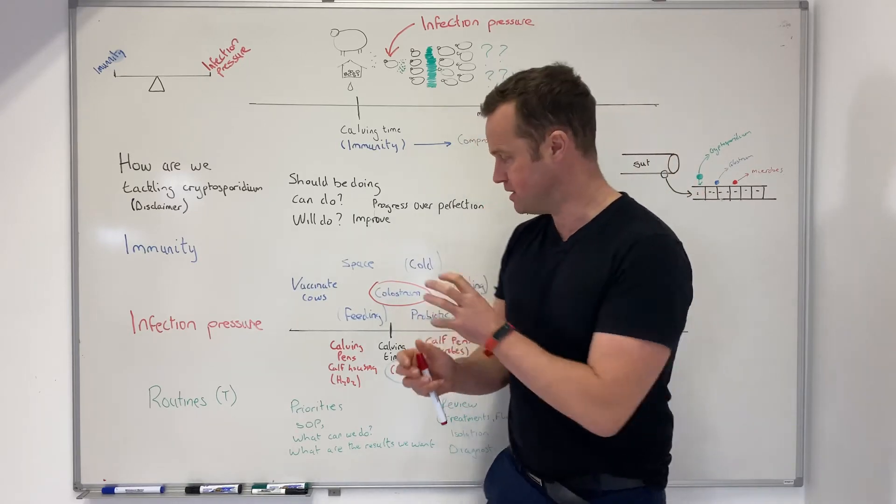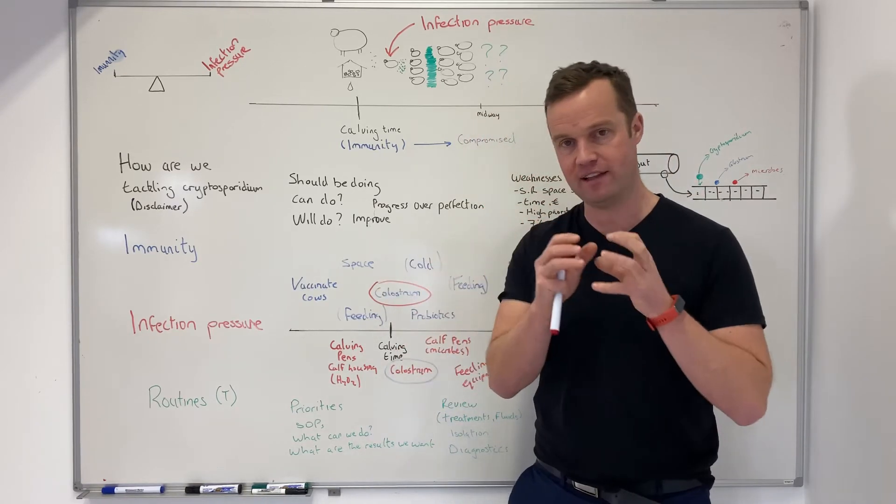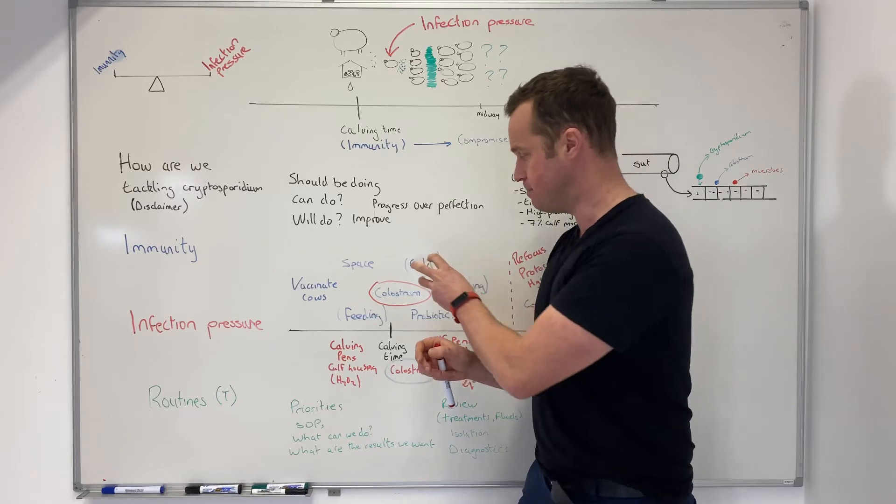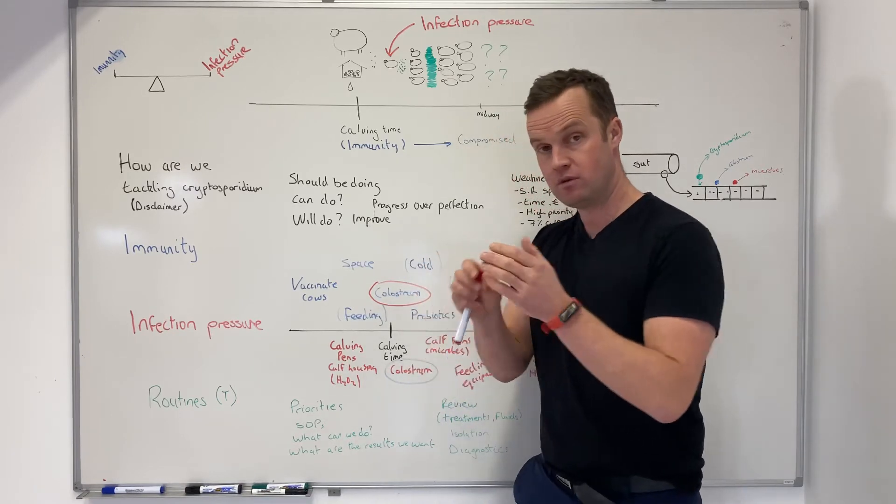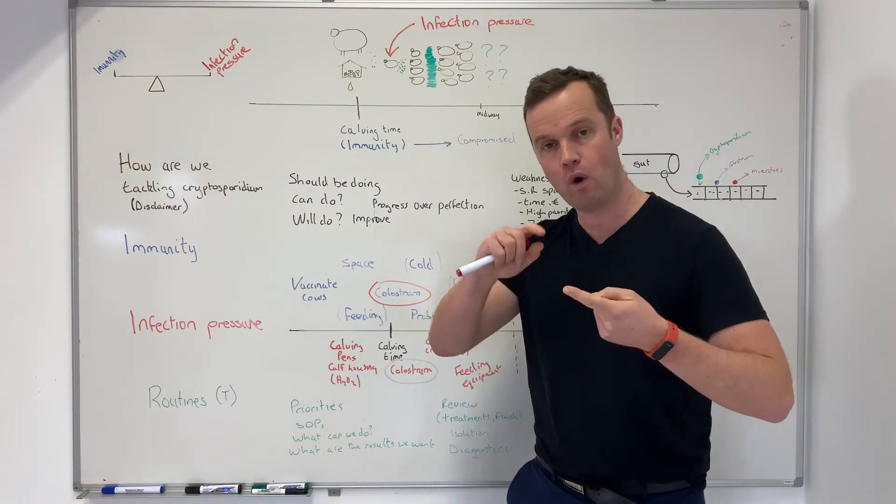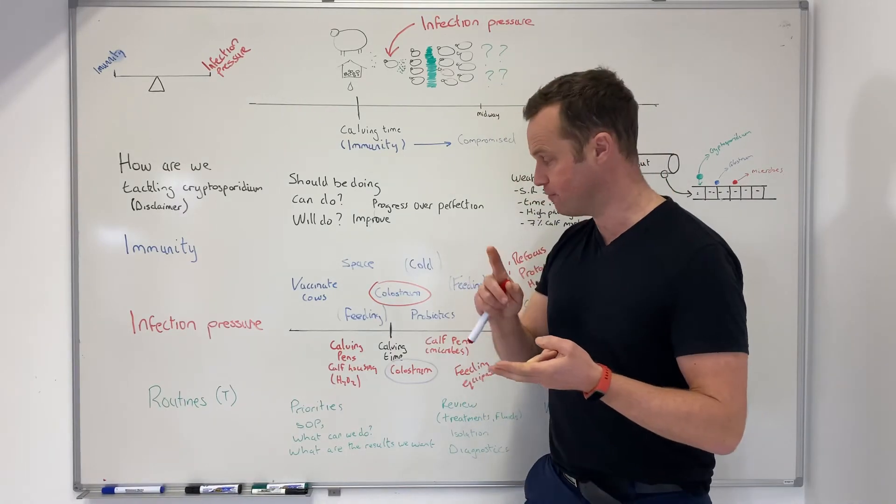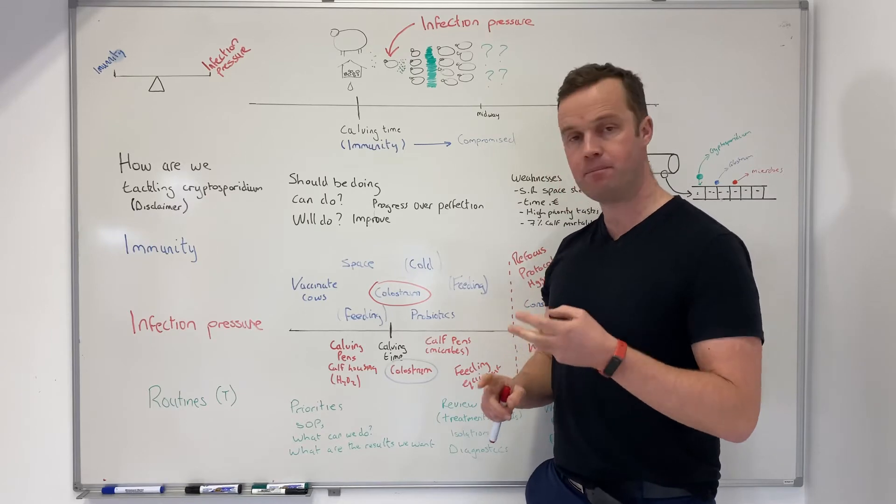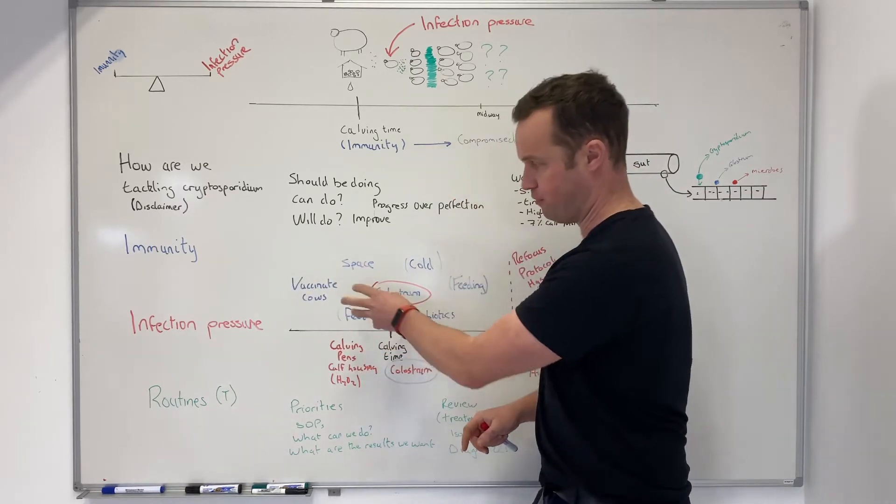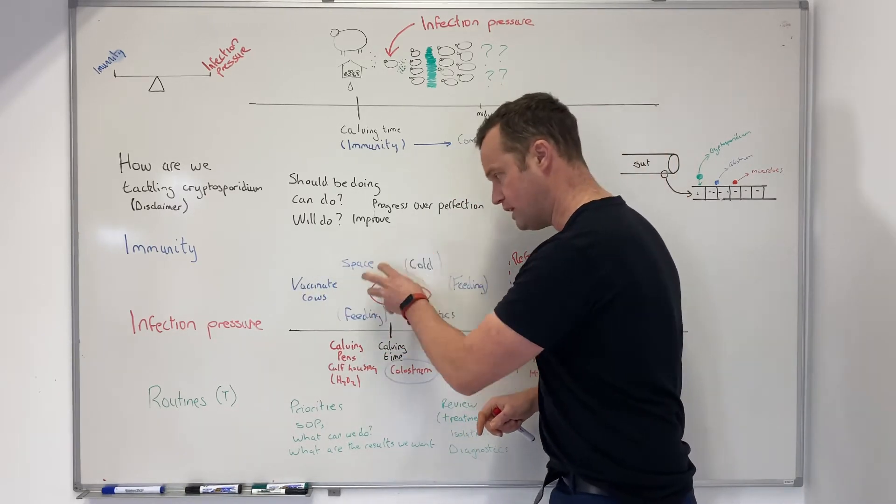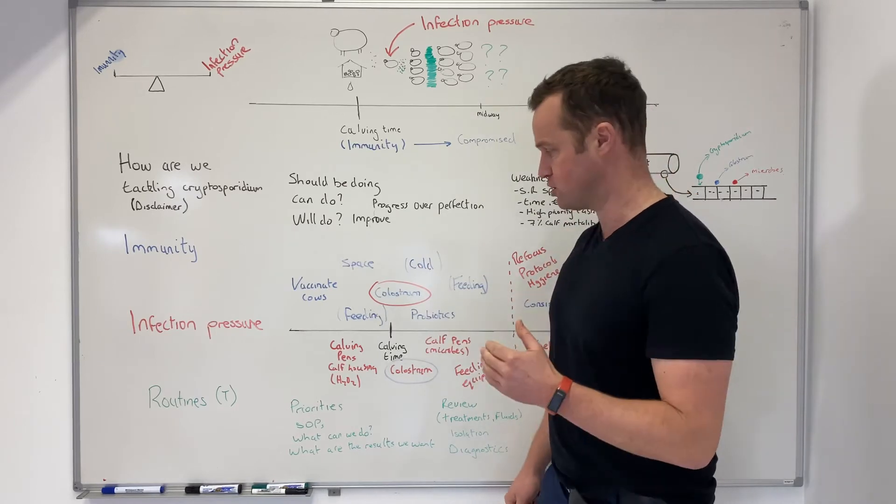Then what we do with colostrum - this is the building block for calf health, not just calf scouring. It's the building block for calf performance. We need to look at how quickly we get it in, the quantities we get it in, aiming for 3 liters of colostrum at a minimum on the farm. And I'll talk about how we're going to work with colostrum from infection pressure as well. We're really focused on colostrum on the farm.